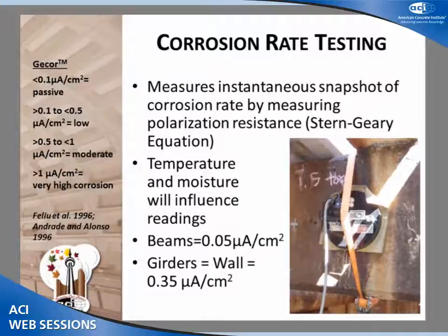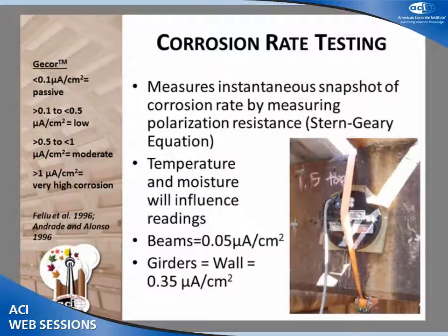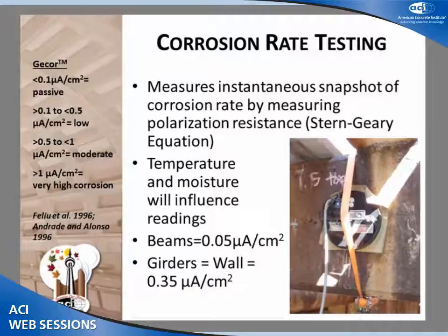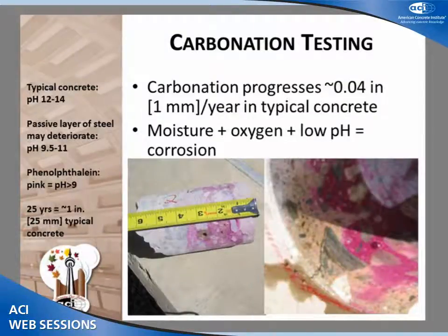We did corrosion rate testing at the same areas where we did half-cell potential to align those two values. We measured polarization resistance using a similar reinforcement connection setup and translated that into an instantaneous snapshot of the corrosion rate at each location. We had low values for the beams and moderate-to-low values for the girders and walls. We weren't able to test the piers due to geometry — the cylindrical shape prevented us from mounting the device for a good reading.